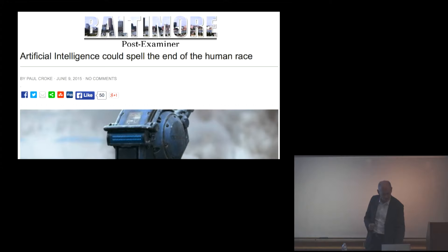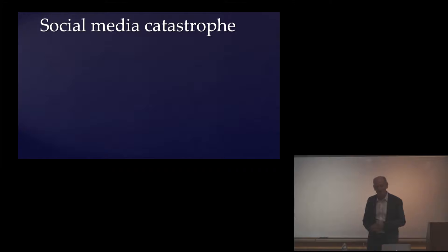So in the last ten minutes I'll talk about possibly the most serious issue. What is Elon Musk talking about when he says you're summoning the demon? What he means is that you're making something more intelligent than yourself. How exactly do you propose to control it? How exactly do you propose to maintain power forever over something that is intrinsically more powerful than you are? That's the question that we face.